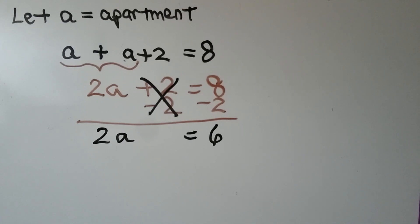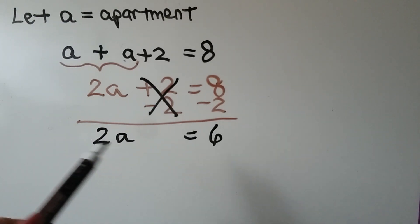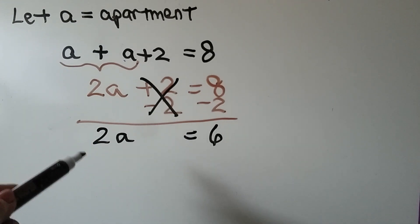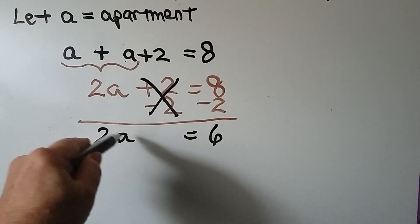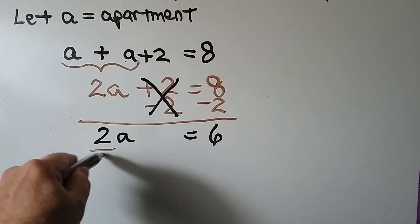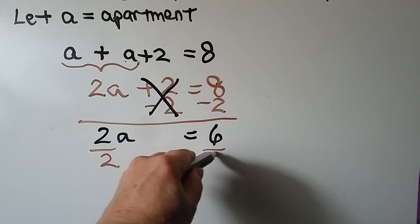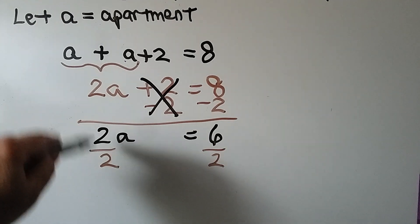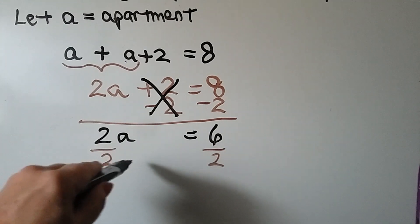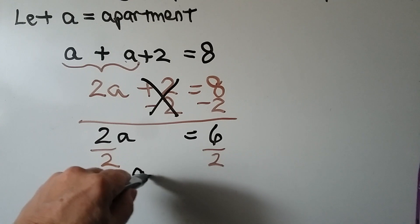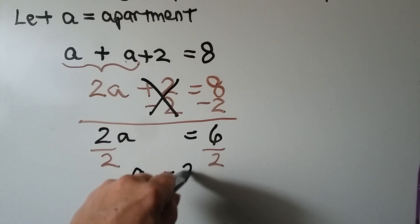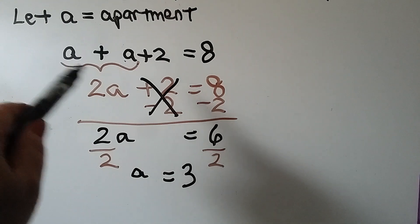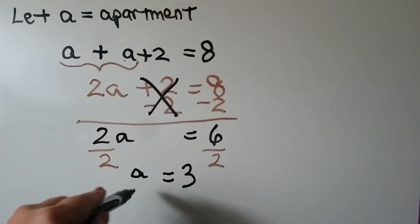Because we've got two a here, and that's two times some number a, the inverse operation to solve this would be dividing. Because that's a multiplication, we would divide by two on both sides of the equal sign. Same numerator and denominator gives us a one, so that means we have a that is equal to six divided by two, which is three. And if a is equal to three, then a plus two is equal to five.